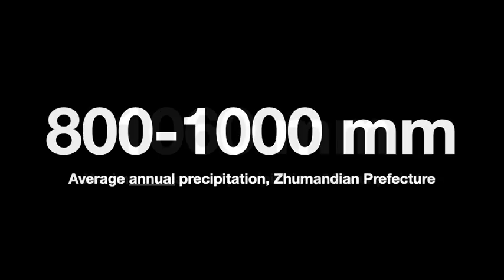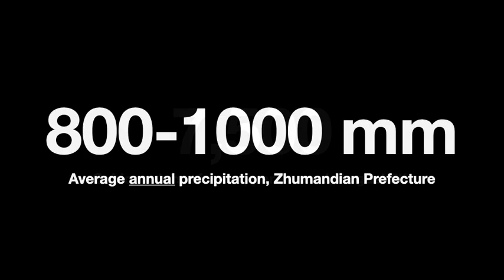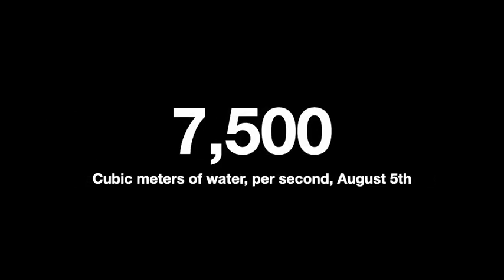The typhoon on that fateful night dumped more water in a 24-hour period than the Zhu Ma Dian Prefecture got in an average year — 800 to 1,000 millimeters. The rainstorm acted in an unpredictable manner, making operating the dam extremely challenging. On August 5th it dumped 448 millimeters, causing 7,500 cubic meters of water per second to flow into the dam reservoir — well above the dam's rated maximum discharge of just 3,000 cubic meters per second.